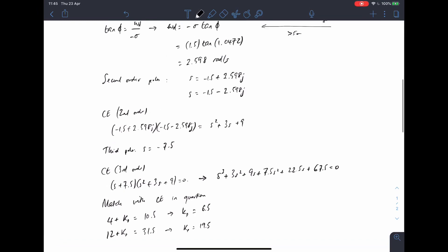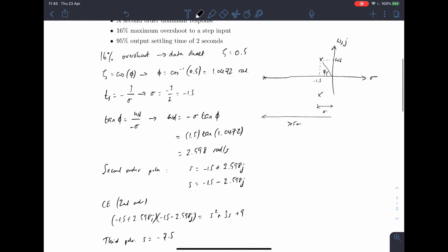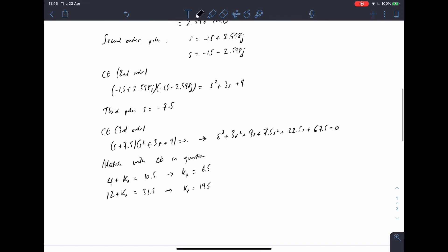And then Ki is going to be equal to 67.5. So there's the solutions to those terms there.